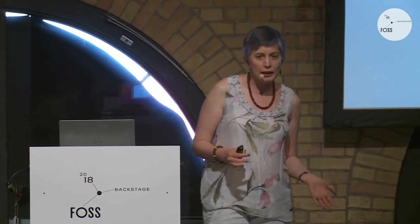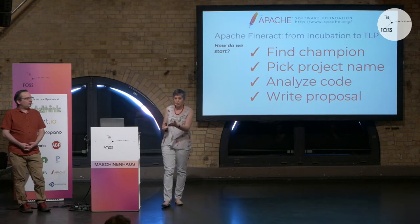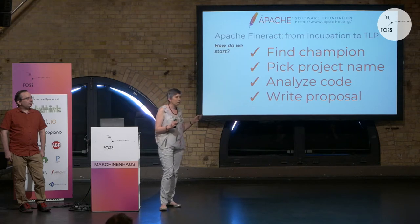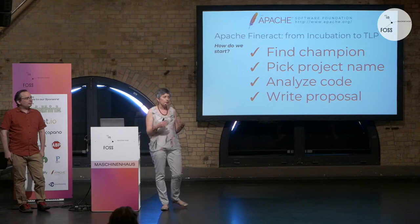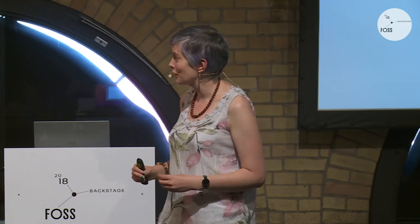What was our process like? The first thing we did was find a champion — our champion was Ross Gardler. Then we drafted a proposal and picked a project name. We couldn't keep the old project name because the MIFOS initiative still existed as an independent entity — you can't fork a brand, so we had to pick a new name to exist under at the Apache Software Foundation. Then we had to analyze the code — this was actually the hardest part — looking for any dependencies that would inhibit somebody from using that code in their own projects, basically looking for GPL or LGPL dependencies. We wrote a proposal, sent it to the Apache Incubator list, and were voted in in December of 2015.